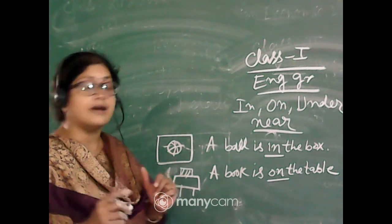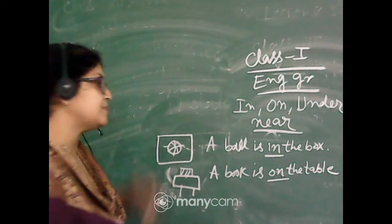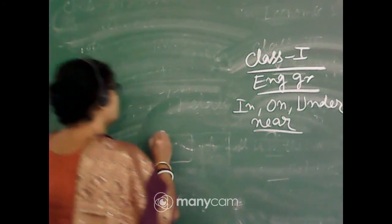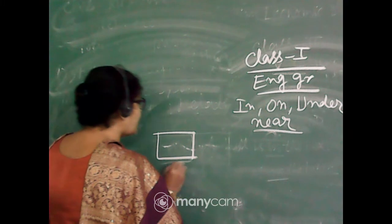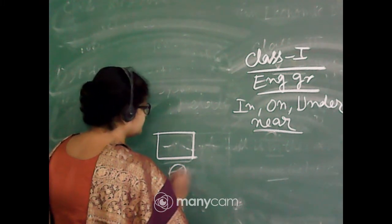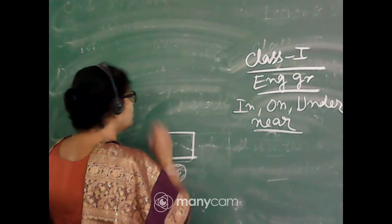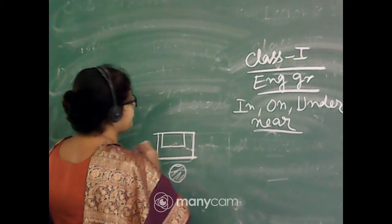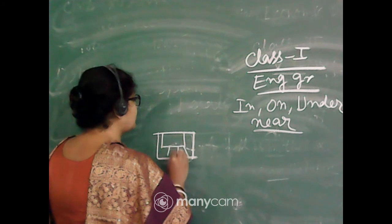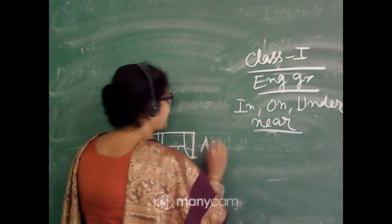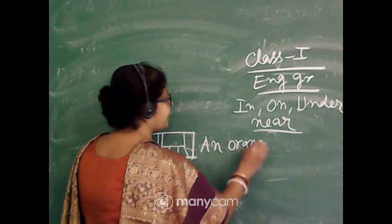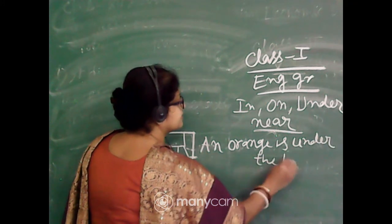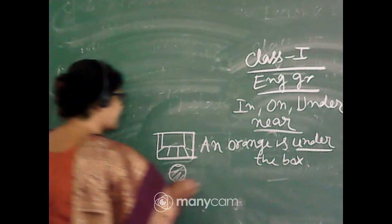Next is under. What is under? I am just telling, here I am rubbing these two sentences. Under, here one orange is there. So what is it? It is one box is there or one table is there. So I can write: an orange is under the box. So under means that the position you should remember.